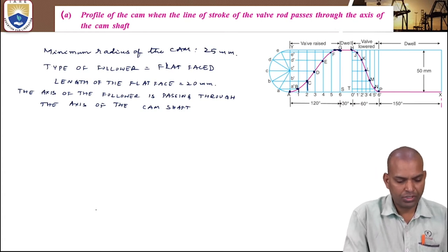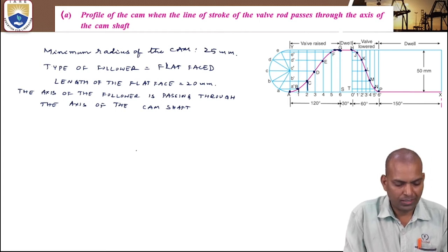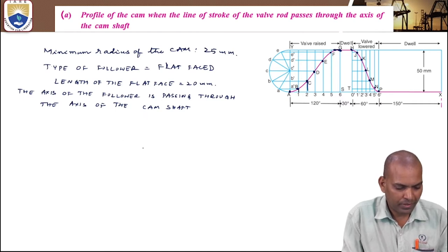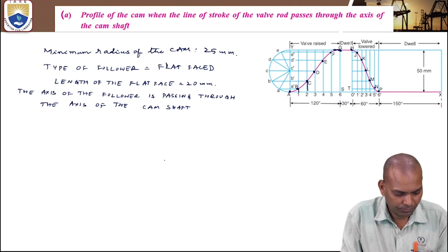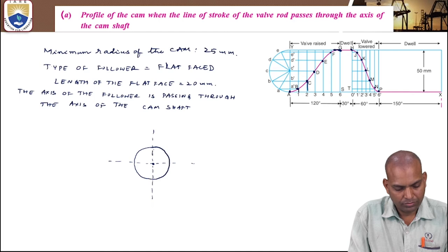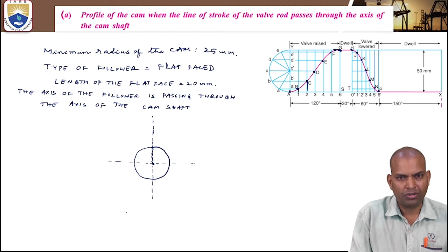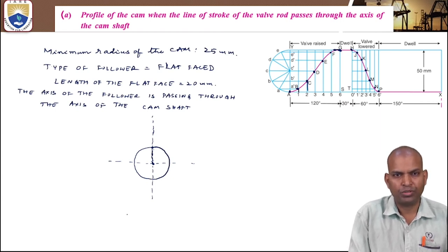First, draw a circle with a radius of 25 millimeters using a compass — that is a 50 millimeters diameter circle. This is the center line and the axis of the follower. The contact point is on this base circle. The base circle is the circle drawn with the minimum radius of the cam.